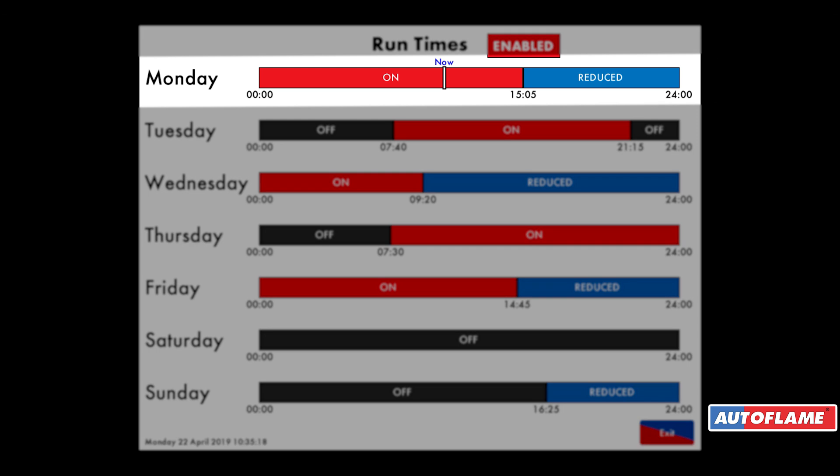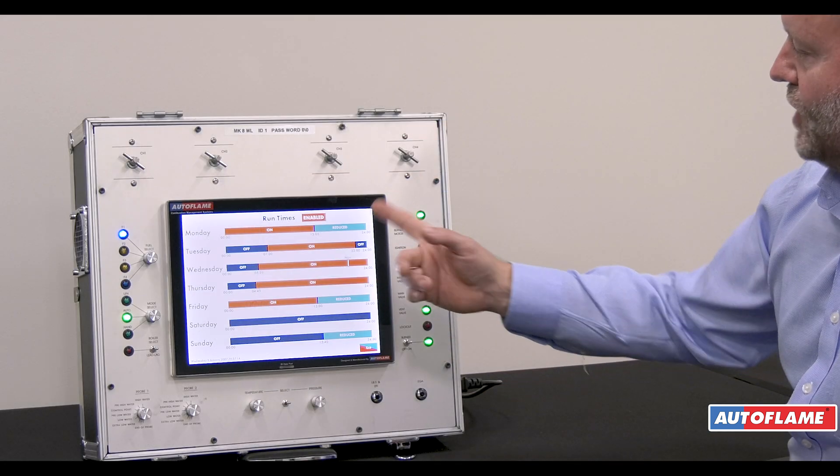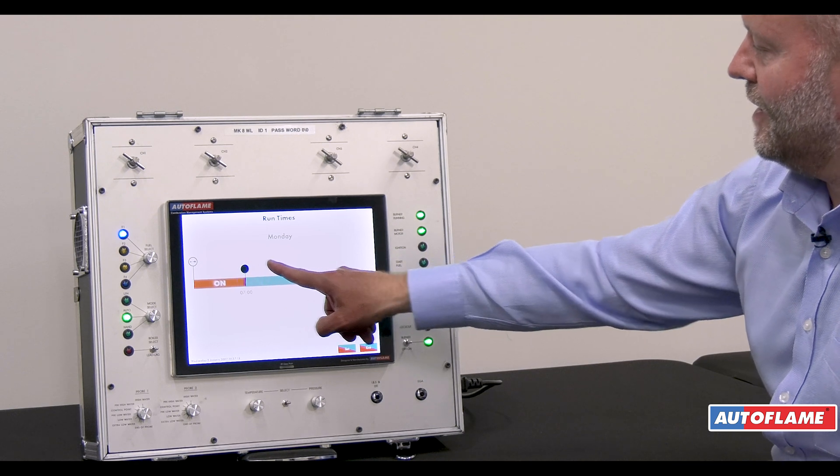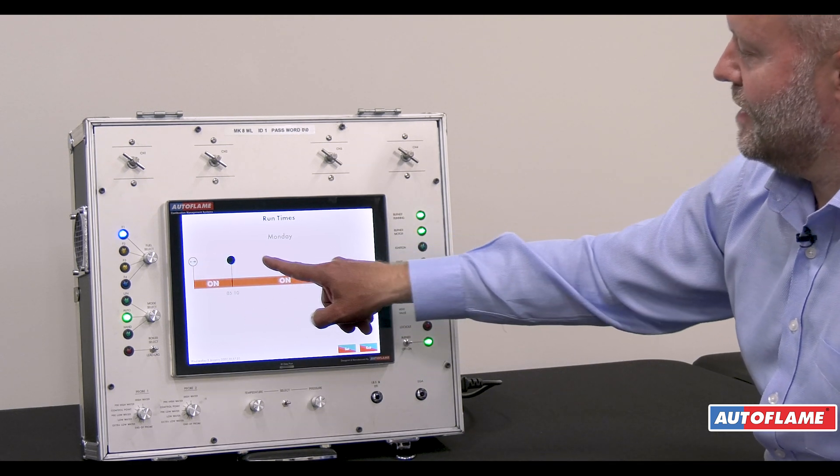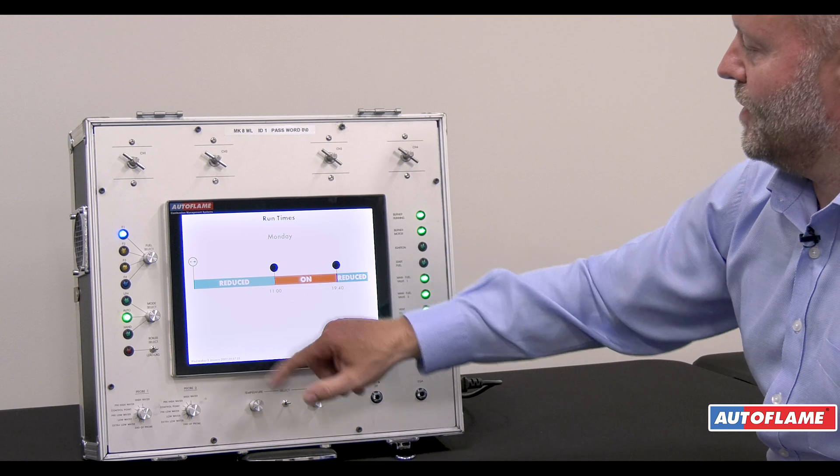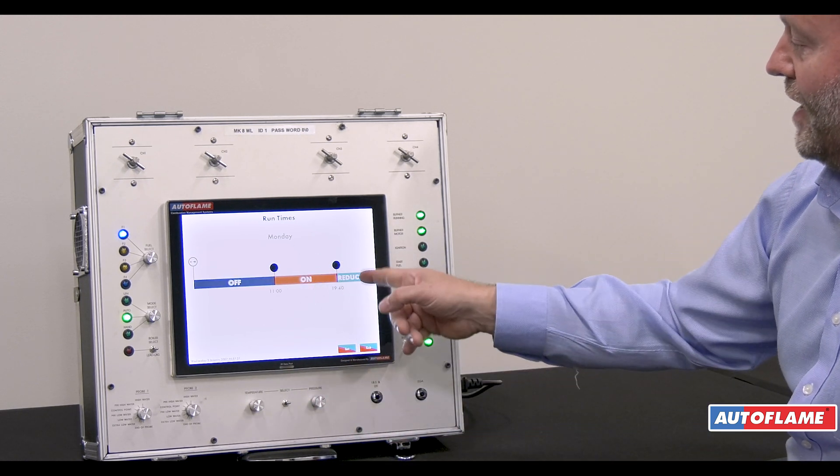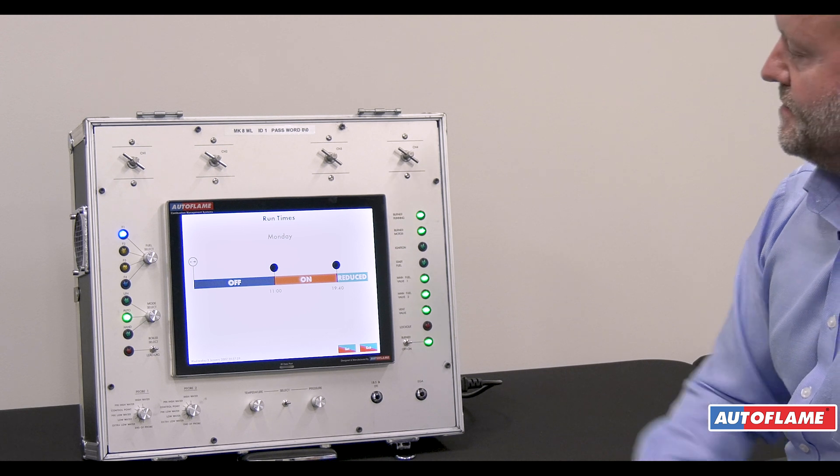Then it will run at the reduced set point. If I want to change any of these, I can just click on here, and by dragging these buttons around, I can now say my burner is going to be off until 11 o'clock, then it will come on, then it will run at reduced set point.